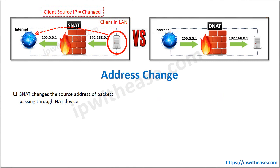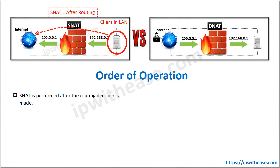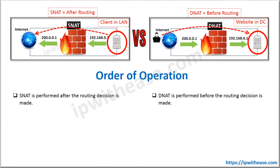Address change: Source NAT changes the source address of a packet passing through the NAT device, while DNAT changes the destination address of a packet passing through either the router or the firewall. In terms of NAT order of operation, SNAT is performed after the routing decision has been made — routing flow and routing definition are established first, and only then does SNAT come into picture. In case of DNAT, it is performed before the routing decision is taken for any device.